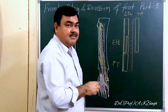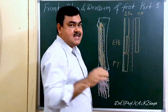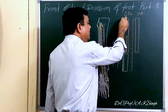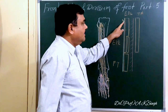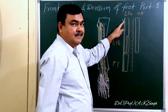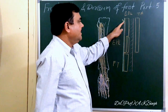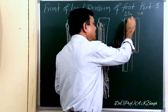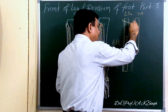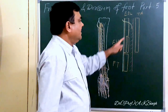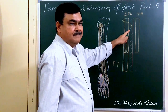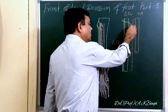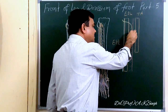Here is the position of the deep peroneal nerve, which is a branch of the common peroneal nerve. It pierces at the level of the neck of the fibula — it pierces the anterior intermuscular septum, then again it pierces extensor digitorum longus. It then comes anterior to the interosseous membrane and lateral to the anterior tibial artery. So in the upper one-third part, its position is lateral.